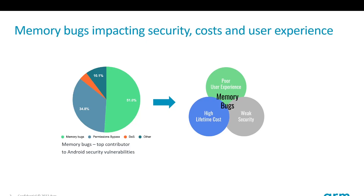According to Google, memory bugs are the top contributor to Android security vulnerabilities. Memory bugs are also responsible for higher lifetime costs in software development and poor user experience. Additionally, developers know how difficult it can be to find a memory bug.